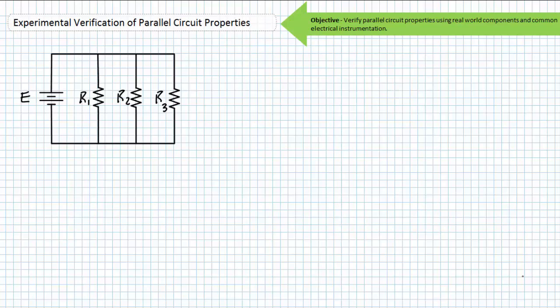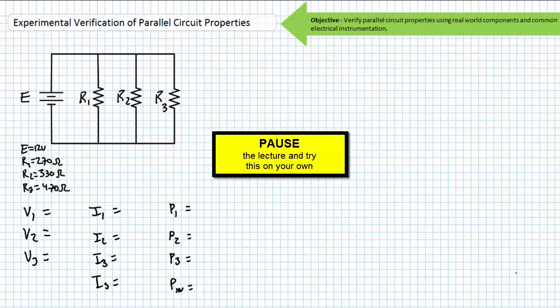Then we'll intentionally open and short out components to observe the effect on other circuit properties. Finally, we'll bring it home with a quick lab activity that employs not elements in parallel, but rather sources. Part one of this activity makes use of a parallel circuit of three resistors supplied by a single source — 12 volts, R1 is 270 ohms, R2 is 330 ohms, R3 is 470 ohms. Pause the lecture and solve for the voltage across each component, the current through each component, the power dissipated by each component, the source current, and the power supplied by the source. You are not authorized to directly calculate total resistance until the very last step.